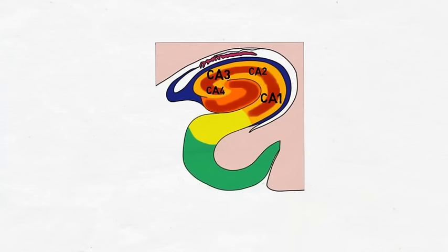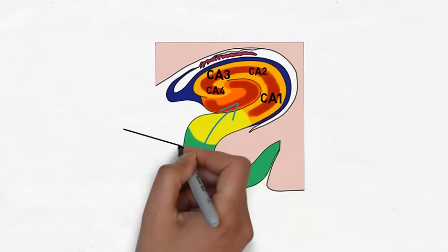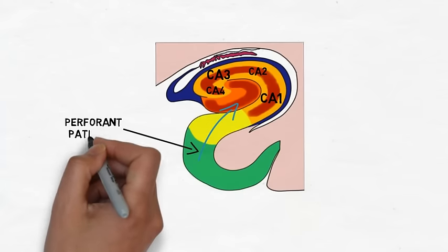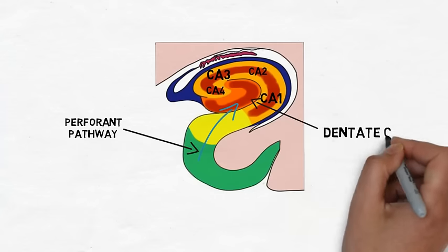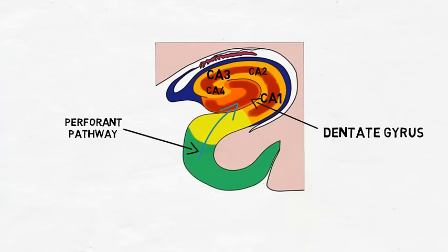The hippocampus receives information from the rest of the cerebral cortex primarily via the perforant pathway, which originates in the entorhinal cortex and projects to the dentate gyrus. Fibers then leave the dentate gyrus and project to neurons in the CA3 region of the hippocampus.